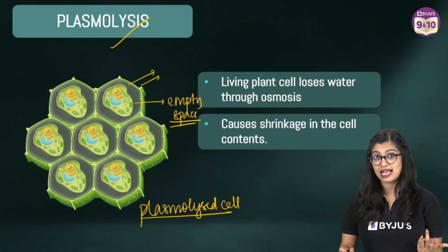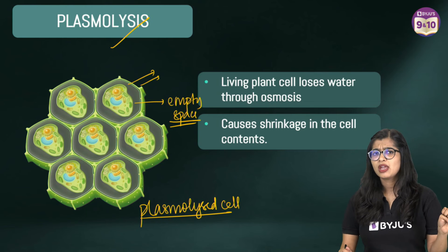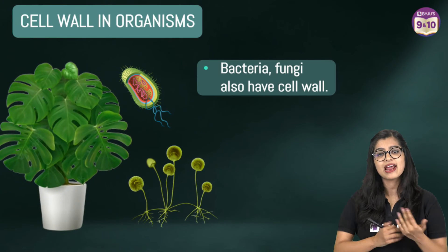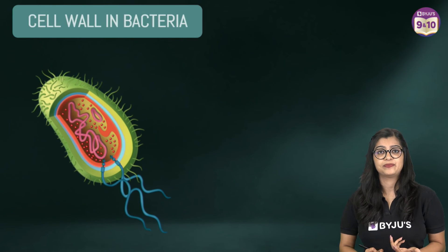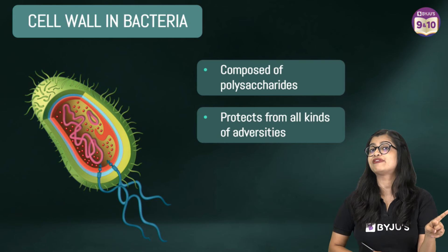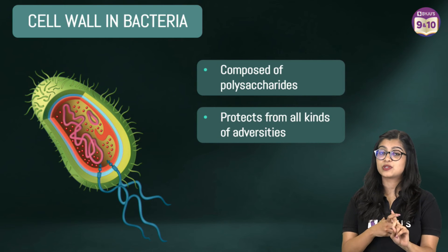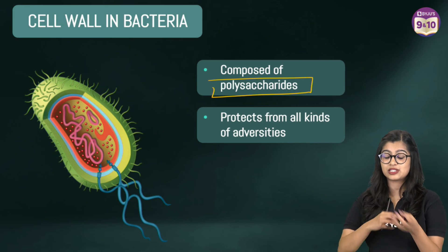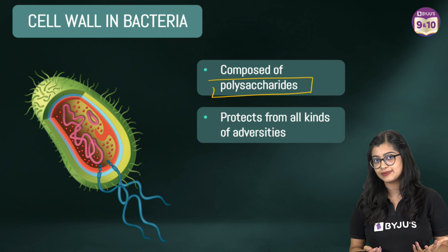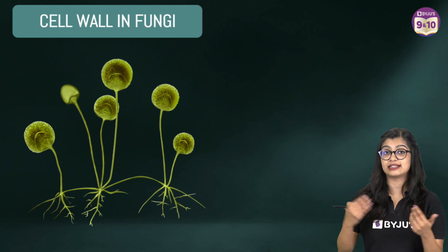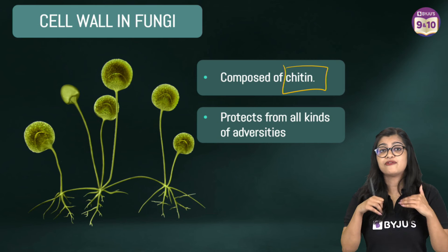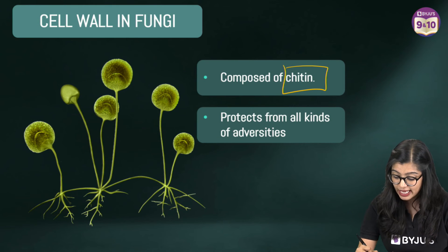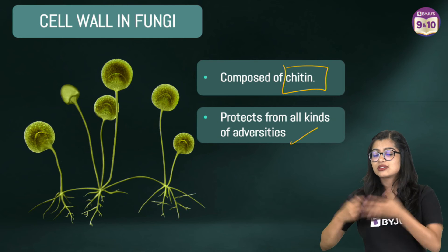Does this mean that only plants have a cell wall and no other organism has one? As a matter of fact, no. There are various organisms which do have a cell wall — like bacteria, for example. It's just that the composition of the cell wall is quite different. In the case of plants it is made up of cellulose, but in the case of bacteria it is made up of complex polysaccharides — an intricate network of complex polysaccharides. In the case of fungi, the cell wall is made up of chitin. But the function that a cell wall serves — whether in a plant cell, in bacteria, or in fungi — is to protect the cell from all kinds of adversities.